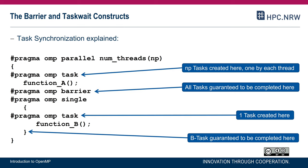Now let's look at when tasks are created, how many, and when their completion is guaranteed. In a parallel region with a team of NP threads, each thread encounters a task construct, so NP tasks will be created — one by each thread. Tasks are not work-sharing constructs, so each encountered task implies generation of a task that may or may not be deferred. Function A will be executed NP times, possibly by different or the same threads. After the barrier, all tasks must be completed before any thread may pass, so function A will have been executed NP times before the barrier is passed.